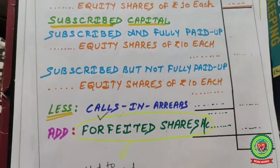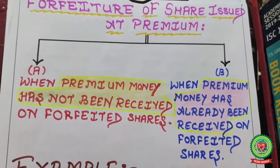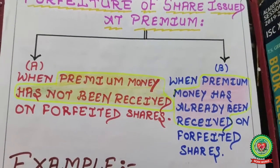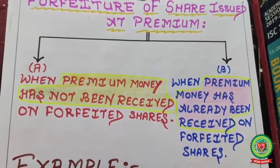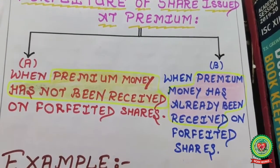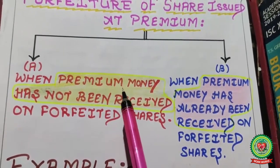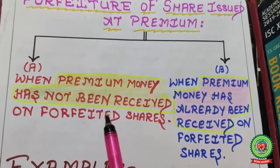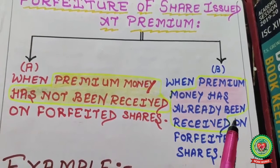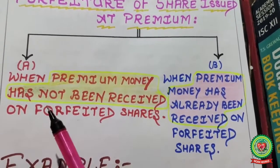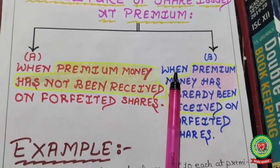Now the main part — today's topic: forfeiture of shares issued at a premium. When you cancel shares that were already issued at a premium, two cases are available. Case one: when premium money has not been received on forfeited shares. Case two: when premium money has already been received on forfeited shares. Simply: when the shareholder did not pay the premium, and when the shareholder did pay the premium.